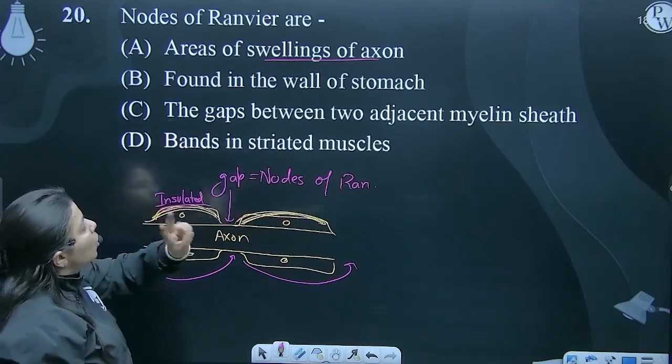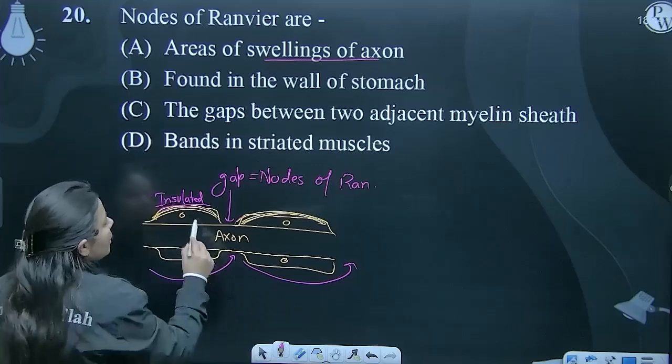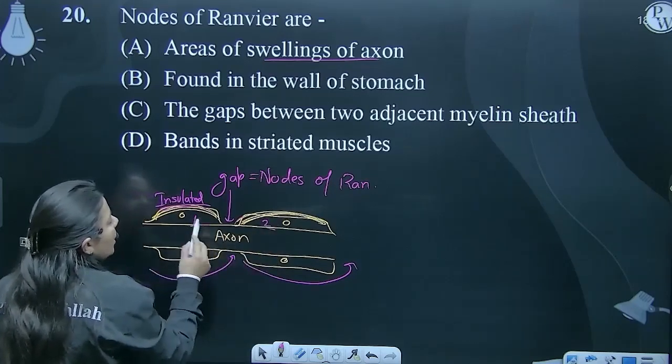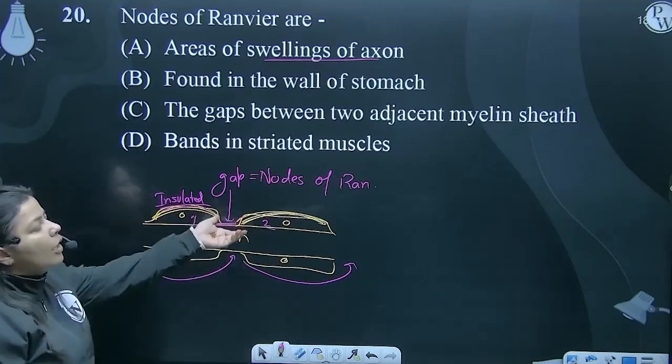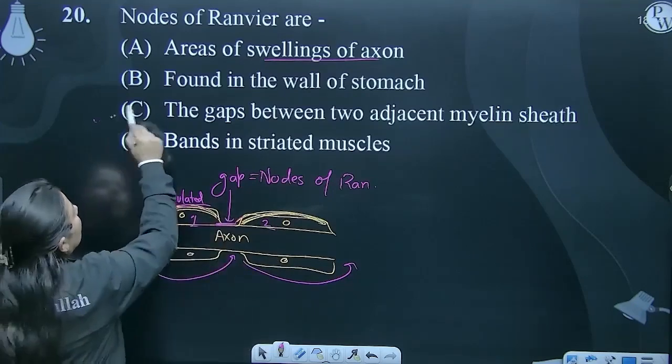The gaps between two adjacent myelin sheaths, yes. One and two adjacent myelin sheaths, and the gap we are asking, that gap is what we are asking - Nodes of Ranvier, yes.